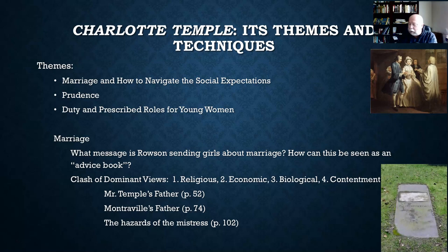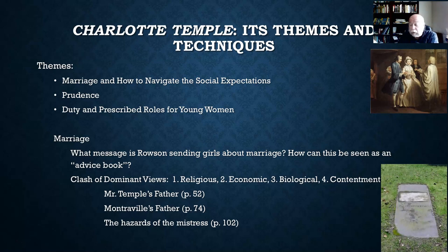On page 102 of my text, in chapter 18, we read this passage: 'The wife whose breast glows with affection to her husband and who in return meets only indifference can but faintly conceive her anguish.' She's trying to say the worst thing you can be is a mistress. Even if you're in a loveless marriage, it's better than what Charlotte has become. 'Dreadfully painful is the situation of such a woman, but she has many comforts of which our poor Charlotte has been deprived. The duteous, faithful wife, though treated with indifference, has one solid pleasure — she can reflect that she has not deserved neglect.'